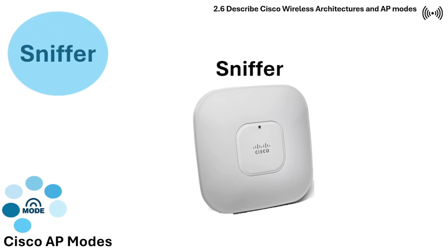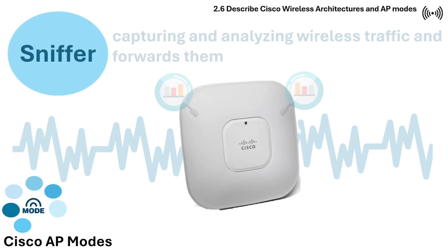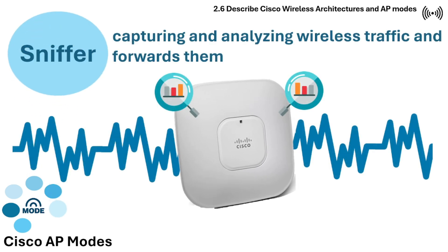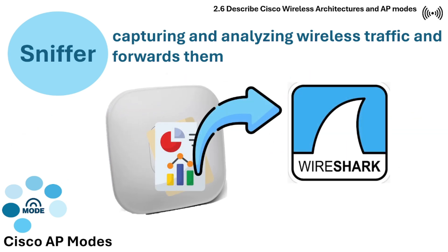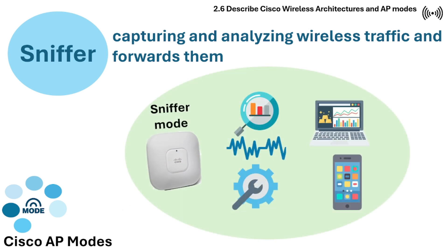Sniffer mode is similar to Monitor mode but focuses on capturing and analyzing wireless traffic, forwarding packets to a packet analyzer using tools like Wireshark. When in Sniffer mode, the AP will neither broadcast its SSID nor connect clients to itself. This mode is useful for troubleshooting and analysis.